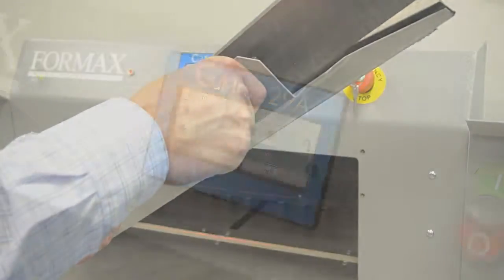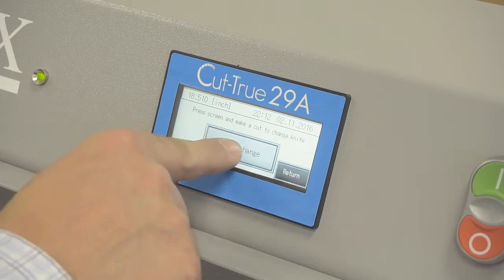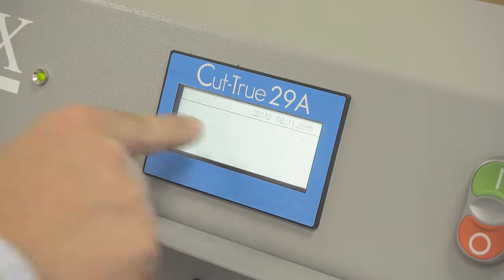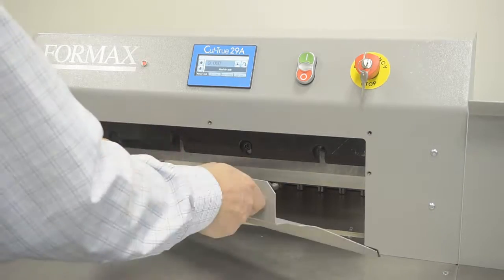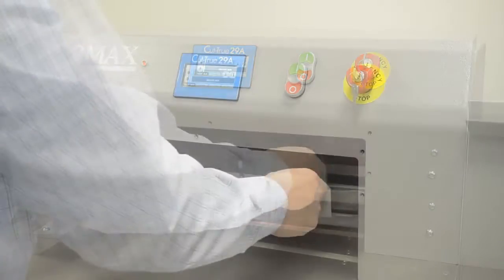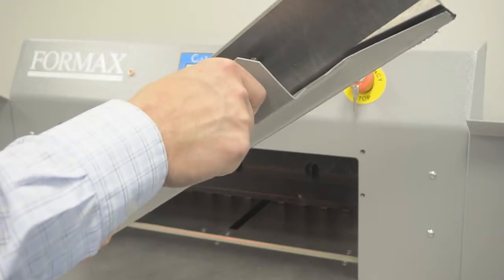When the blade needs to be replaced, the blade change tool makes it safe and easy. Select the blade change option on the control panel, remove the mounting bolts, attach the blade change tool and remove. Simply reverse the process to install the new blade.